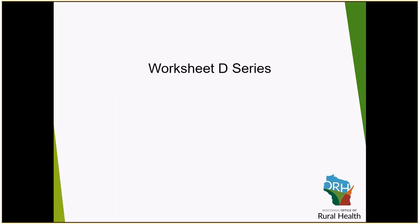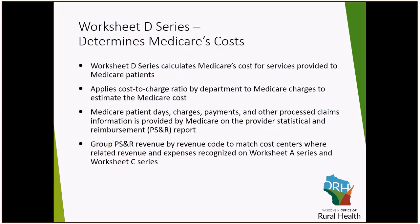After completing Worksheet C, it is now time to complete the Worksheet D series, where we will report the Medicare charges. Worksheet C included all charges for all payers except for any professional revenue. Worksheet D will now reflect only the traditional Medicare charges to calculate a Medicare cost that will ultimately be used to determine your settlement on your cost report. Utilizing the cost-to-charge ratios from Worksheet C by department, multiplied by your Medicare charges, will ultimately determine your estimate of the Medicare cost of those services.